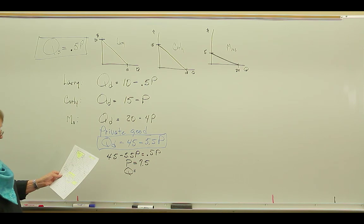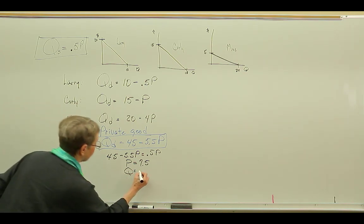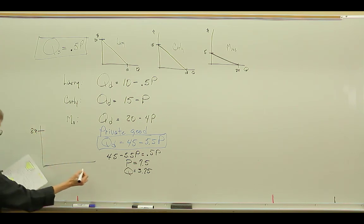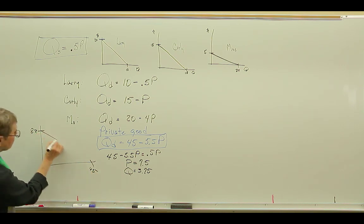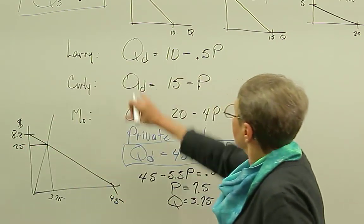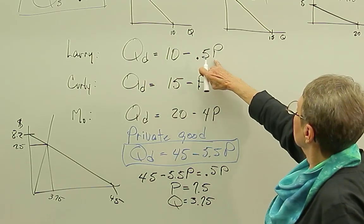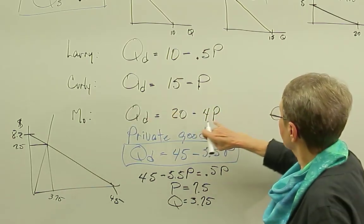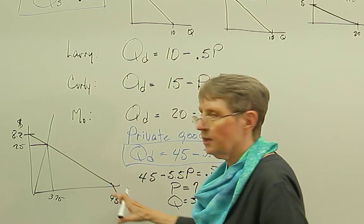So if we were to draw demand and supply, so here's my demand curve, and my supply curve looks like this, and 7.5 is the price, and the output is 3.75. So if this is a private good, a private market, then we would sum up these demand curves horizontally. We would say, if the price is $1, how many would Larry buy? If the price is $1, how many would Curly buy? If the price is $1, how many would Moe buy? And that's how we get this demand curve.